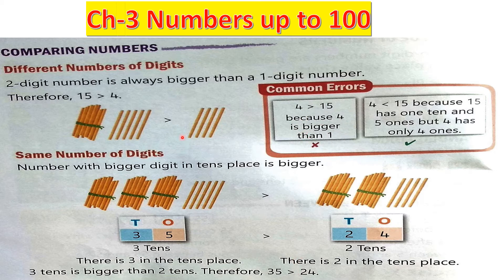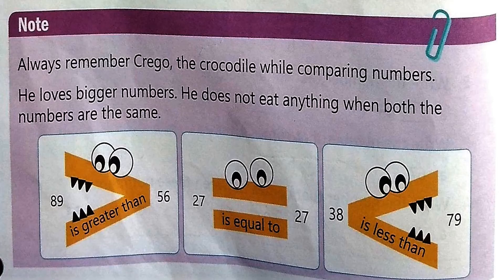Be careful. If there is a two-digit number and a one-digit number, always keep in mind that the two-digit number is always greater than, always bigger than, the one-digit number.